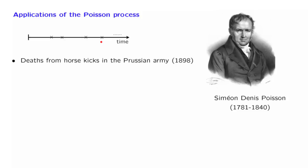The idea here is that a death by a horse kick can happen pretty much at any time, and different arrivals — that is, different accidents — are completely uncoordinated from each other, so the process is sort of completely random.